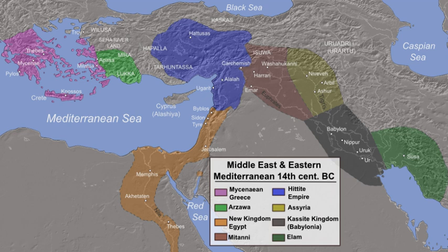Transjordan, the East Bank, or the Transjordanian Highlands — Arabic: Shirk Alardin — is the part of the southern Levant east of the Jordan River, mostly contained in present-day Jordan.